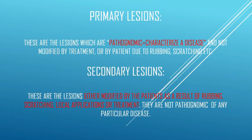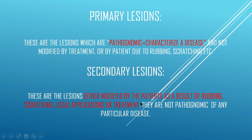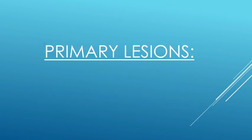There are two types of skin lesions: primary skin lesions and secondary skin lesions. Primary lesions are those which are pathognomonic, meaning they characterize a disease, and those which are not modified by treatment or by patients rubbing, scratching, etc. Secondary lesions are the opposite — they are not pathognomonic to any disease and are modified by treatment or by patients as a result of rubbing, scratching, etc. Let us first discuss the primary lesions.